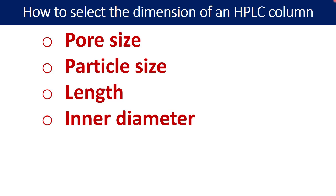These are the four important characteristics as far as column dimension is concerned: the first one is pore size, the second one is particle size, the third one is length of column, and the fourth one is the inner diameter. So let us understand how these four different parameters can be selected wisely to have the optimum resolution and retention time for your analytes.